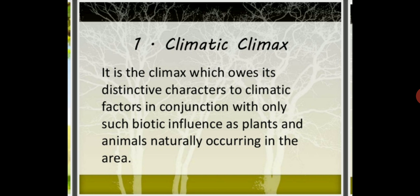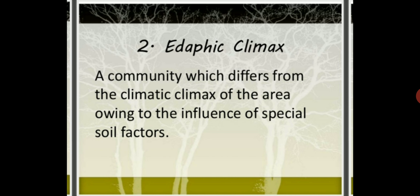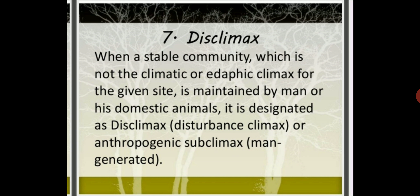Important types of climax are: Climatic climax, which is determined by the general climate of the region. Edaphic climax, where there are many climax communities in an area determined by topography and local microclimates such as soil moisture, soil nutrients, fire, and animal activity. Disturbance climax is a stable community that is not a climatic or edaphic climax, but is maintained by man or his domestic animals.